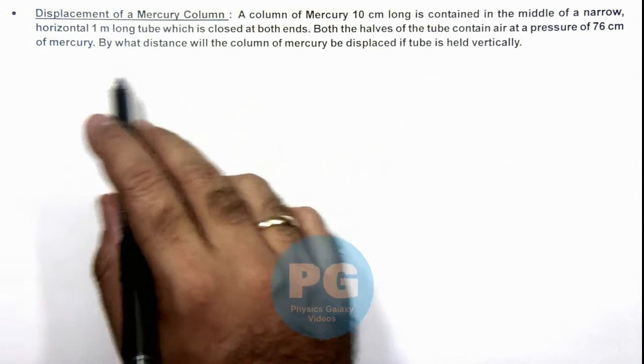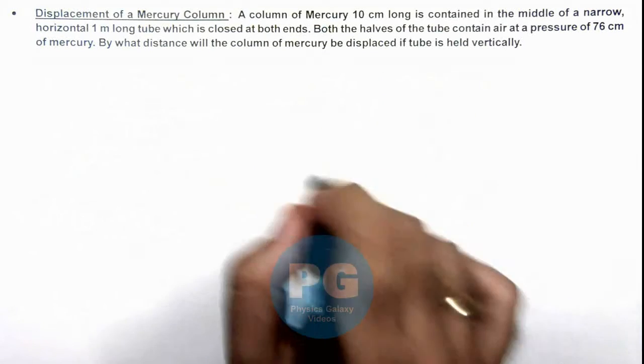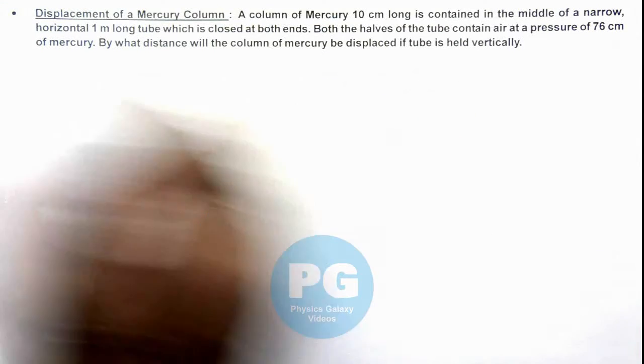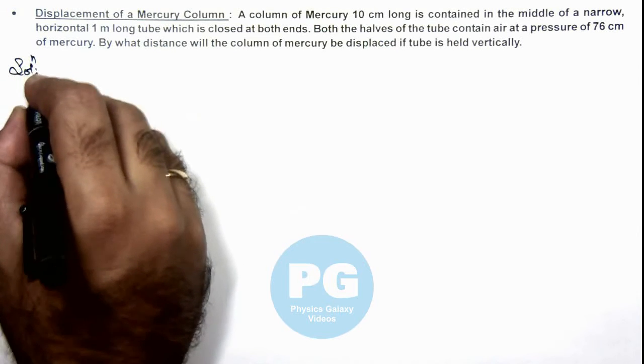It is asking by what distance will the column of mercury be displaced if the tube is held vertically. Now in the solution here first we can draw the picture.